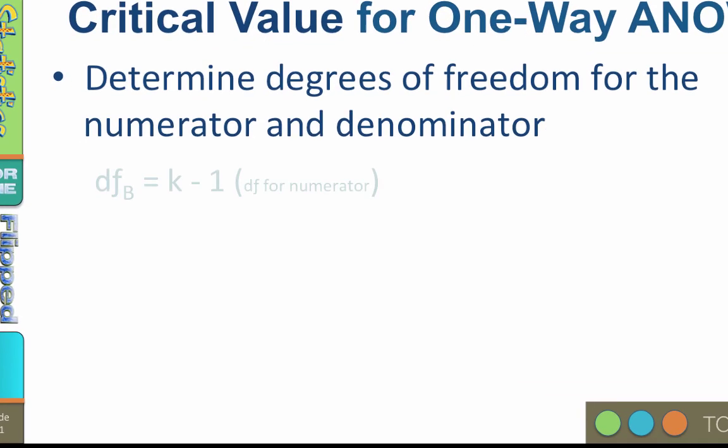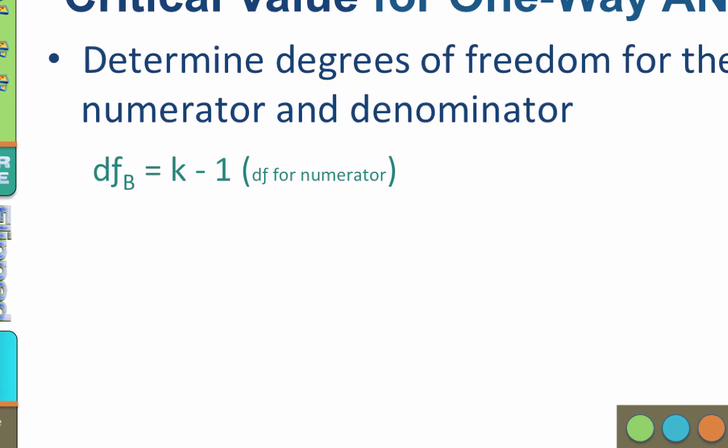The degrees of freedom between equals k minus 1, where k is the number of categories or levels. This is the degrees of freedom for the numerator. So in our example, where we have 20 people who are randomly assigned to 4 groups, k equals 4. So the degrees of freedom between would be 4 categories of diet minus 1, or 3.